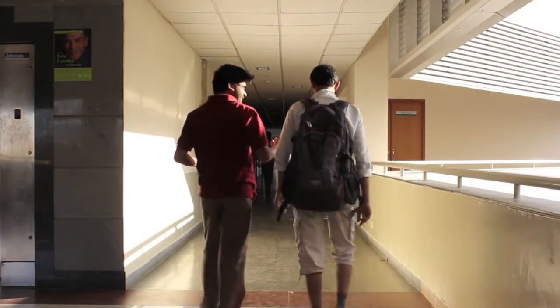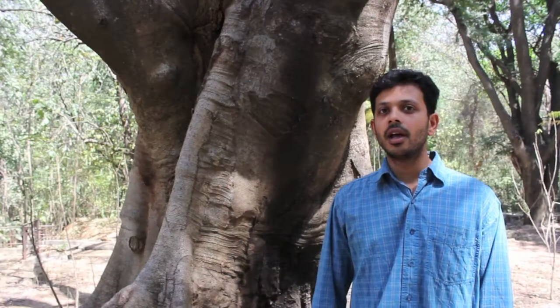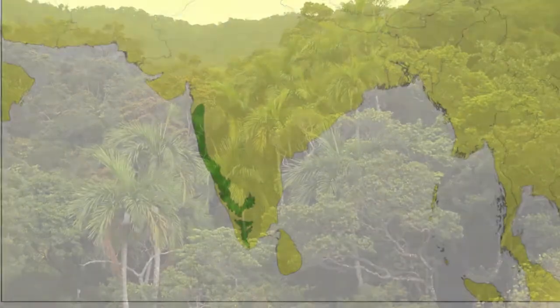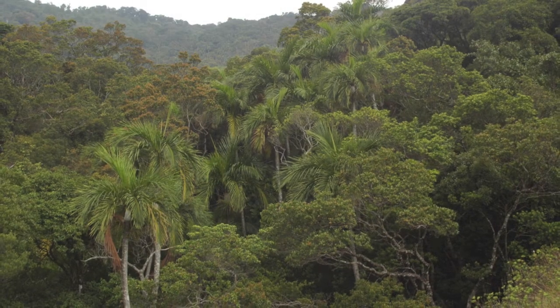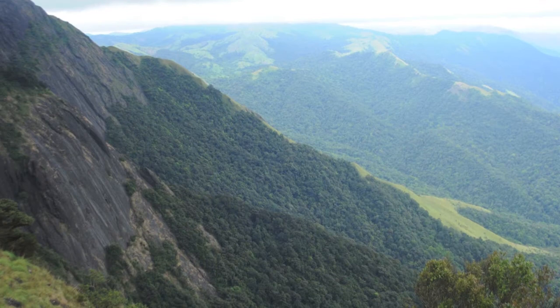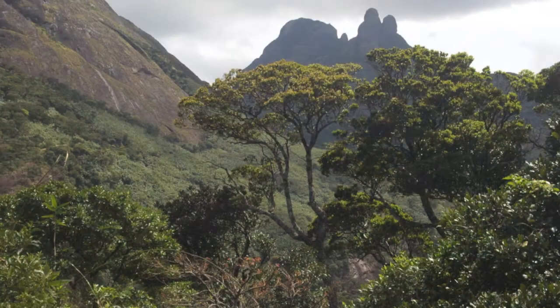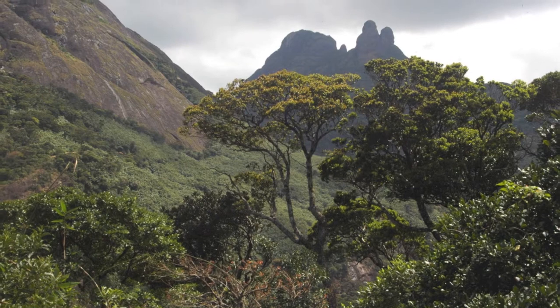Let's see what some of the researchers in our department are currently working on. Hi, my name is Navendu Page, and I'm a PhD student here at the Center for Ecological Sciences. For my PhD, I'm studying diversity and distribution of trees in the evergreen forests of Western Ghats. The evergreen forests are one of the most diverse ecosystems of our country, and most of the trees you see there are not found anywhere else — that is, they are endemic.